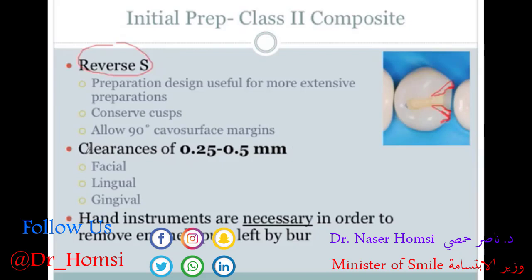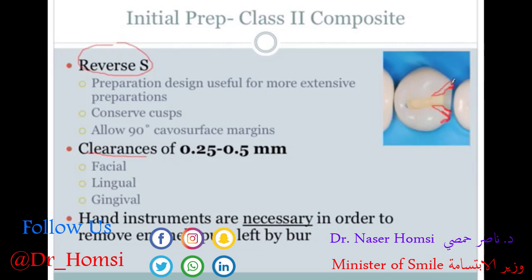Clearance refers to the distance between the cavo-surface margin and the adjacent tooth. We shoot for about 0.25 to 0.5 millimeters — again, this depends on the extent of the preparation and the disease, but it's an important number to keep in mind.